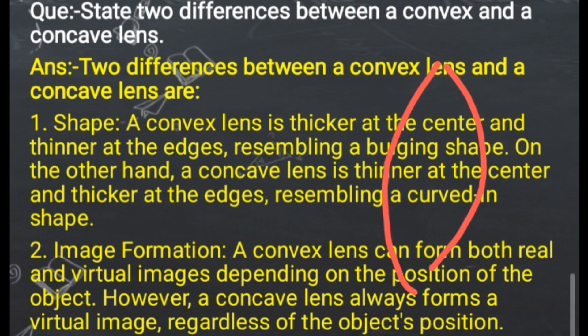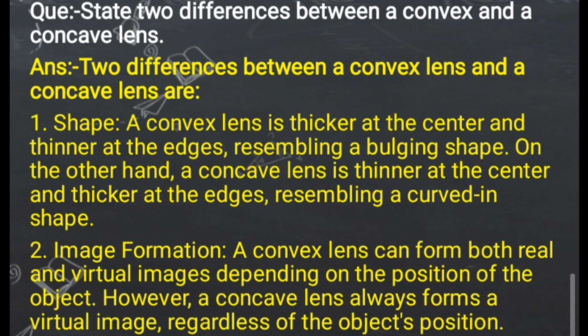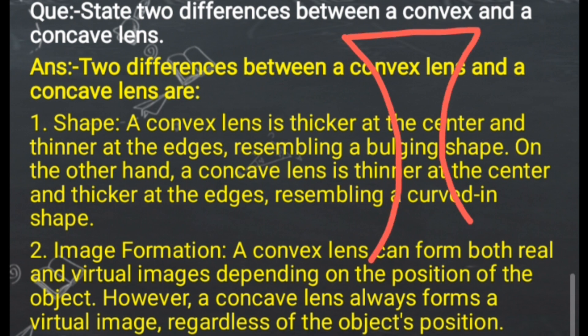This is the shape of the convex lens. On the other hand, the concave lens — what is its shape? The concave lens is thinner at the center and thicker at the edges. The edges are thicker and the center is thinner.